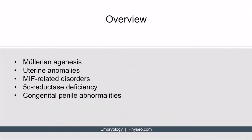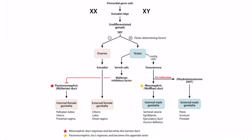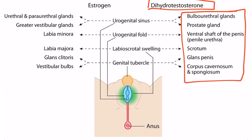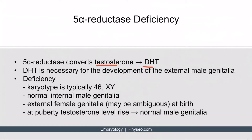Now let's discuss 5-alpha reductase deficiency. 5-alpha reductase is the enzyme that converts testosterone to DHT, the more potent form of testosterone, which is important for the development of external male genitalia. So 5-alpha reductase converts testosterone to DHT, and it's necessary for the development of the external male genitalia. If there is a deficiency, then individuals will be unable to initially develop the external male genitalia. The karyotype is typically 46XY, and patients will have normal internal male genitalia such as the vas deferens and epididymis.